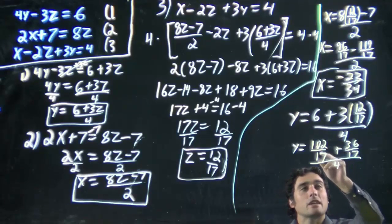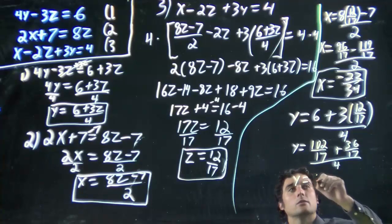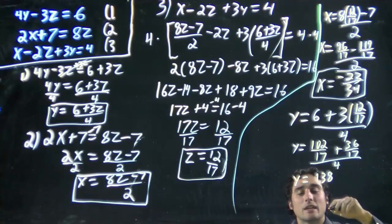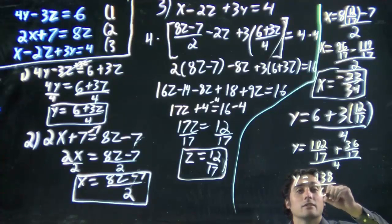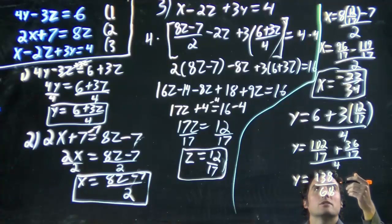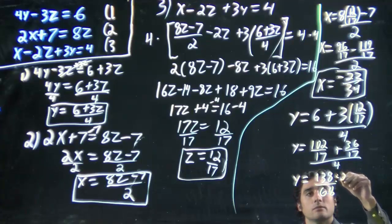Same thing. 102 plus 36, so we're going to get y equals 138. 4 times 17, 68. And we see this could be reduced. Nice easy trick for reducing. Since we have even numbers, I know this can be reduced. What do we do? We can divide both sides, top and bottom by 2.